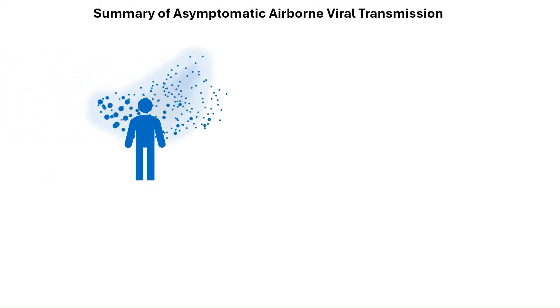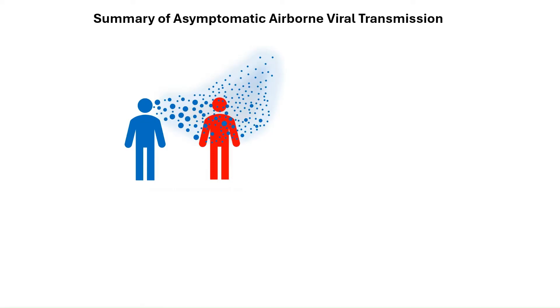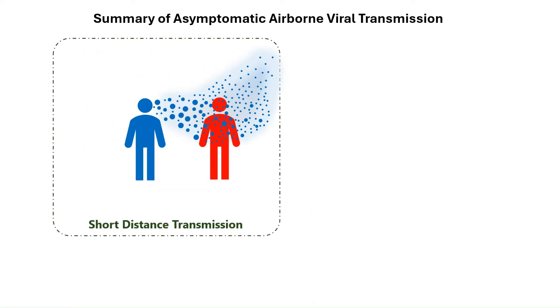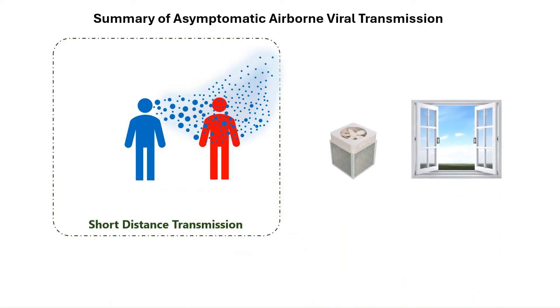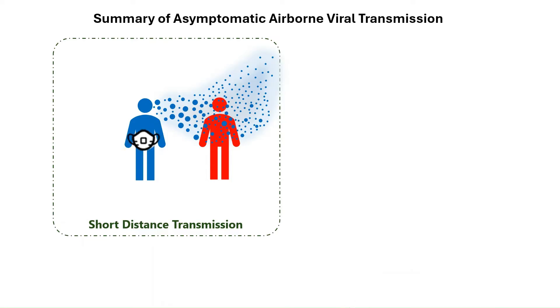In order for SARS-CoV-2 to be transmitted through the air, an infected person needs to exhale infectious aerosol that is then transported and inhaled by a healthy individual. If the healthy person is in the exhalation plume they'll be exposed to the highest dose of infectious aerosol. This means that mitigation techniques like filtration and ventilation will have little to no effect since they are unable to affect the exposure over such a short distance.